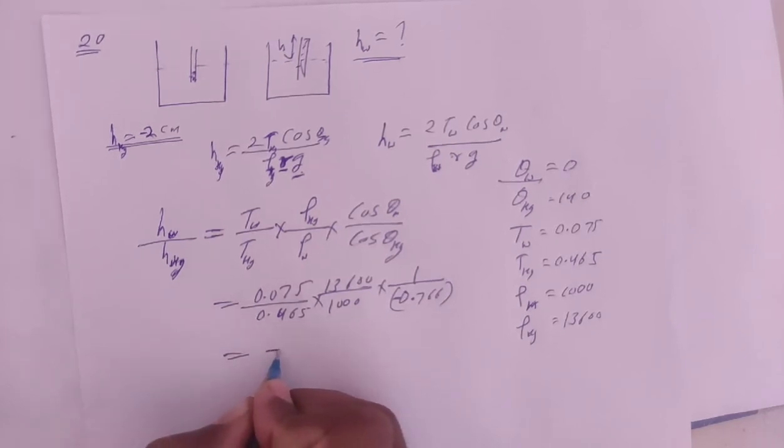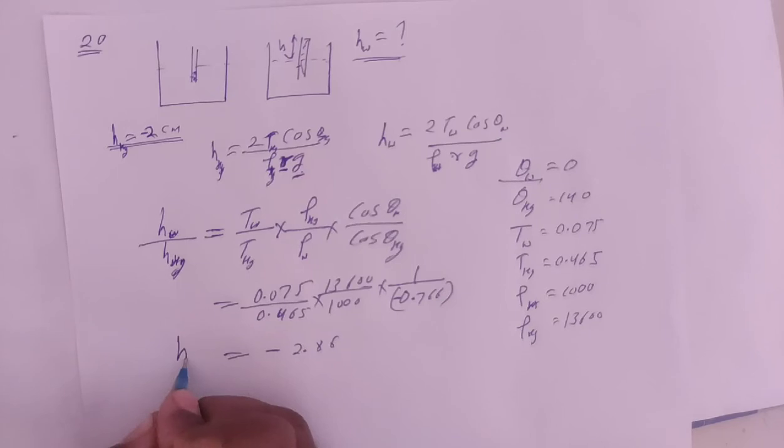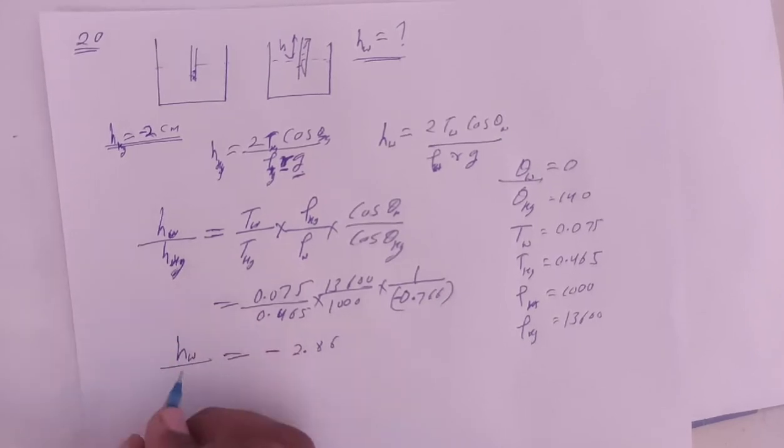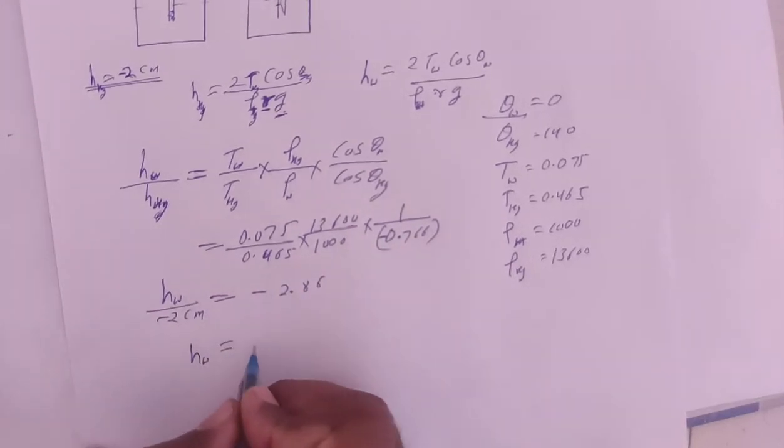Solving this gives minus 2.86. Height of water column upon height of mercury column, where mercury column is minus 2 centimeters. Multiplying this out.